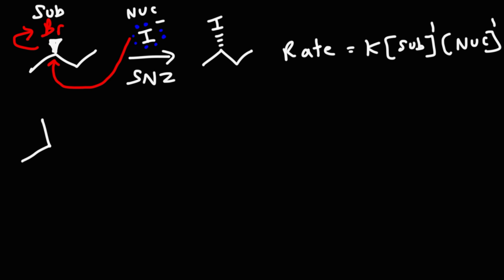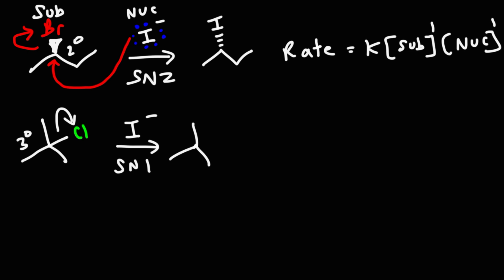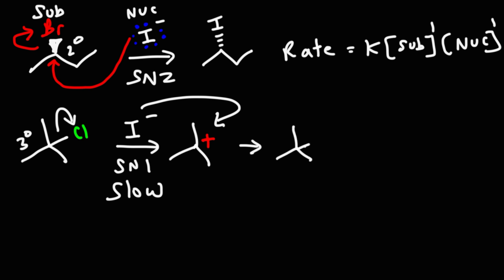Now let's say we have a tertiary alkyl halide — tert-butyl chloride — and we're going to react it with iodide. Because we have a tertiary alkyl halide as opposed to a secondary alkyl halide, this is going to favor the SN1 reaction. In the first step, the leaving group is going to leave and we're going to get a carbocation. This first step — the ionization of the alkyl halide — is the slow step. Then in the second step, iodide is going to attack the carbocation, giving us tert-butyl iodide.